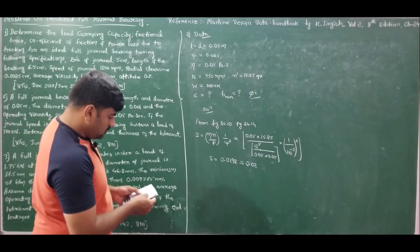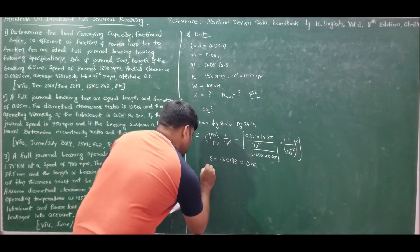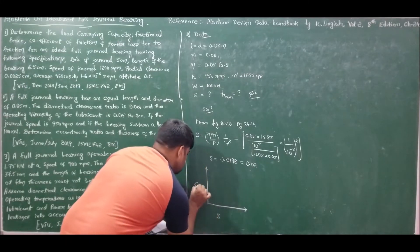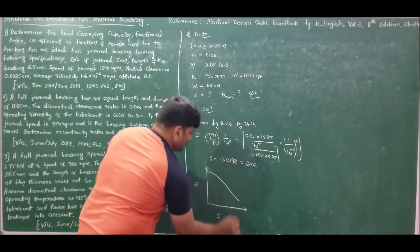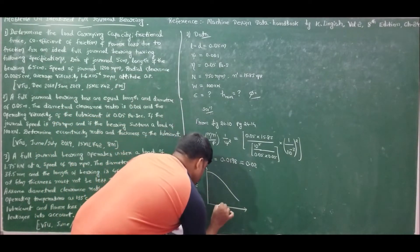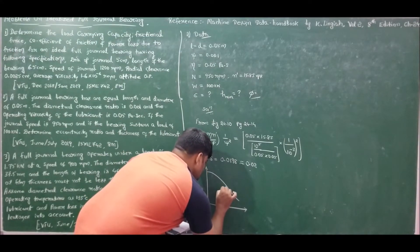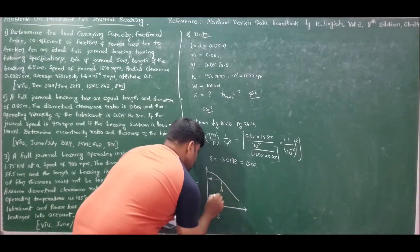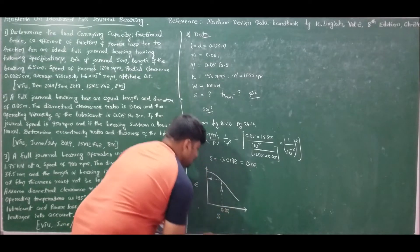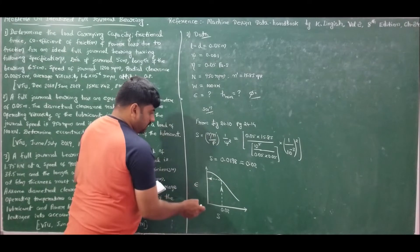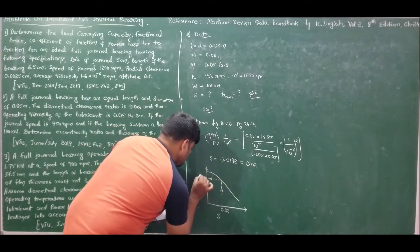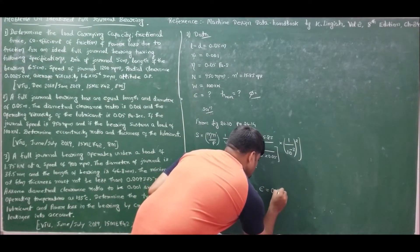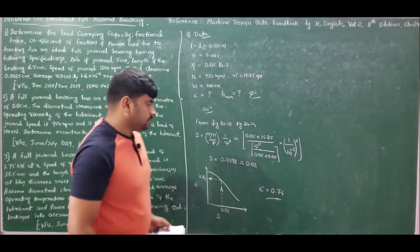From the graph of S versus epsilon (figure 24.10), at S = 0.02, we move up to intersect the curve and read off the eccentricity ratio. We get epsilon = 0.74. Therefore, the eccentricity ratio or attitude is 0.74.